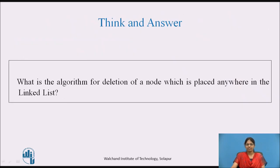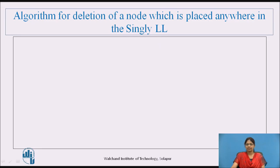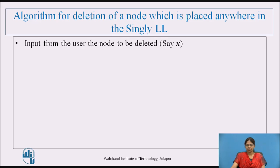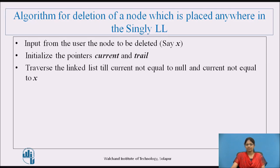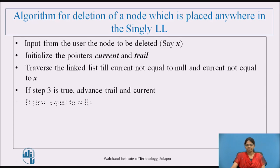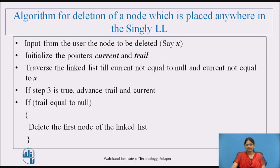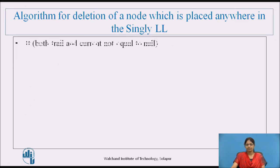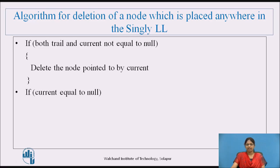Think and answer: What is the algorithm for deletion of a node placed anywhere in the linked list? Pause the video and note down the answer. Algorithm: Input the node to be deleted, say x. Initialize pointers current and trail. Traverse the linked list till current is not null and current's value is not equal to x; if true, advance trail and current. If trail is null, delete the first node. If both trail and current are not null, delete the node pointed to by current. If current is null, print that the node to be deleted is not found. This completes the deletion of a node in a singly linked list.